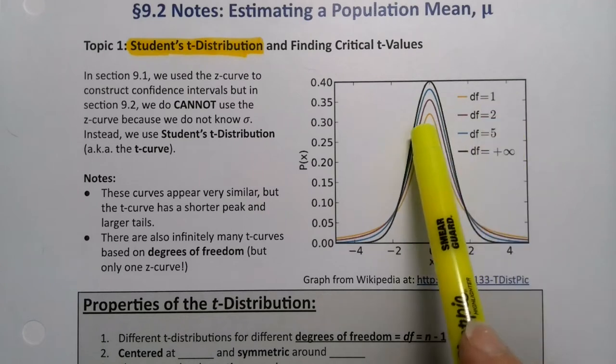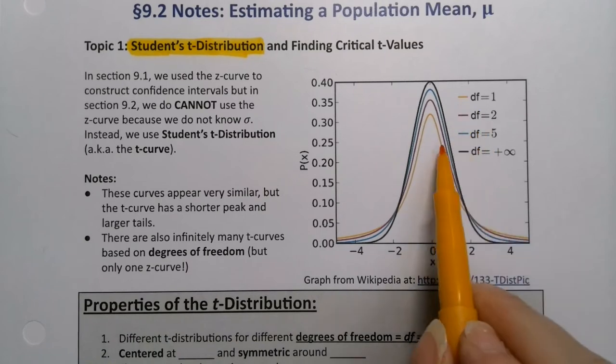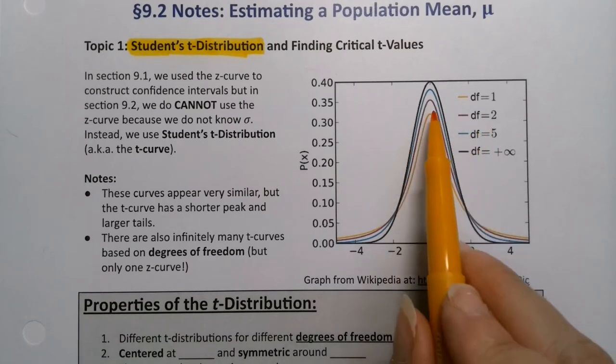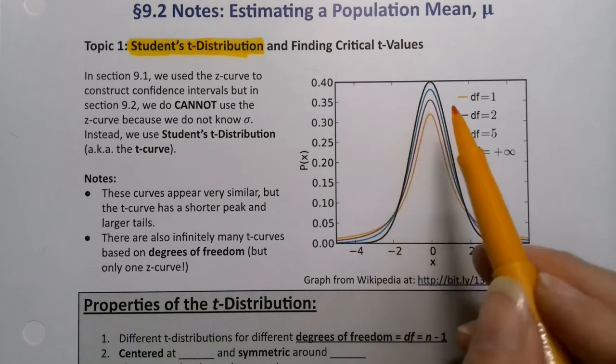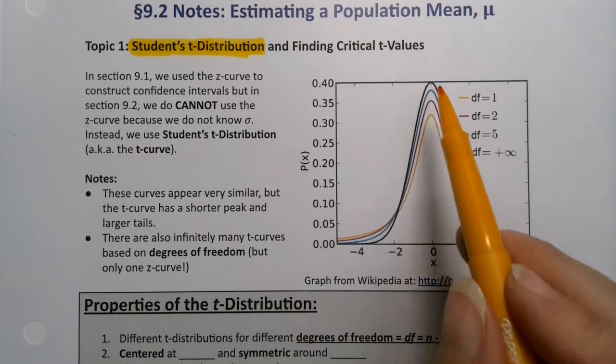Then there are all these other curves for the t curves. The smallest one is that orange one. That orange curve right there is degrees of freedom is one, that's the lowest t curve we can have in terms of the peak. But then we can get another curve at two, another curve at five, six, seven, eight, nine, ten, eleven, twelve. They're all in there.